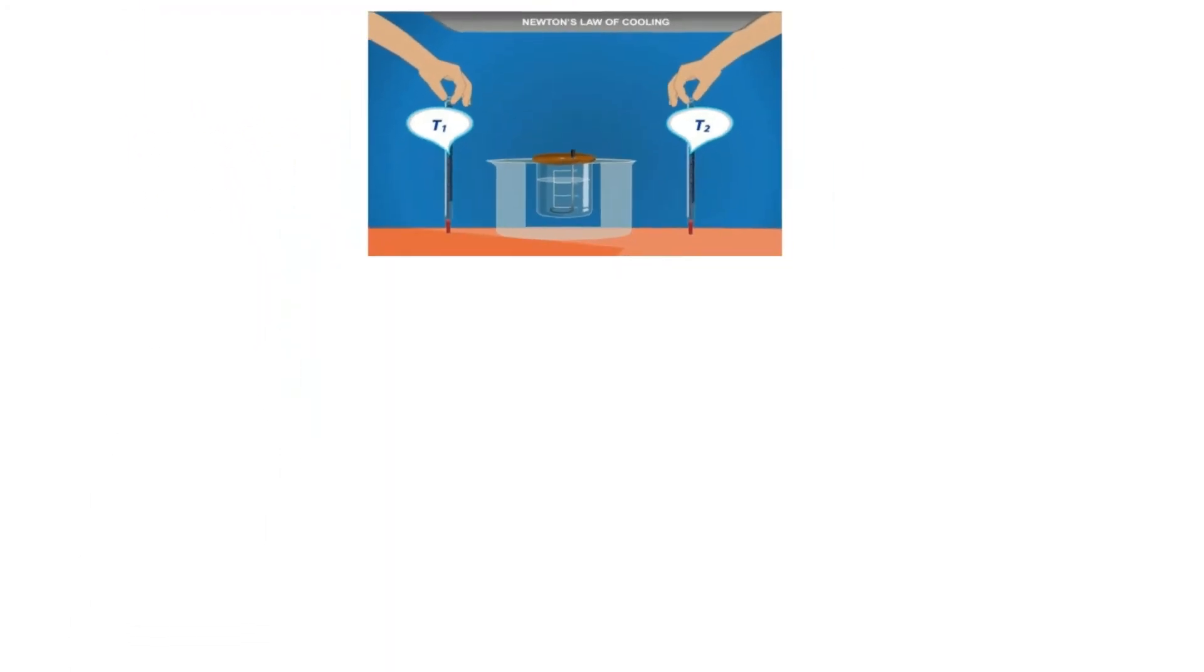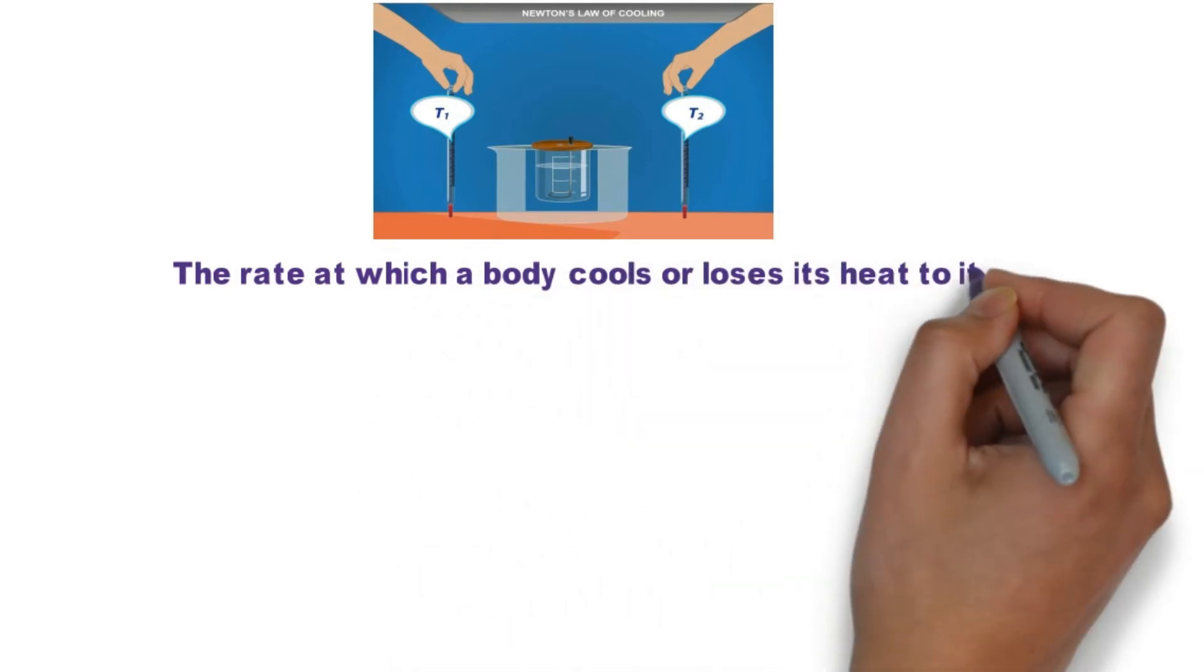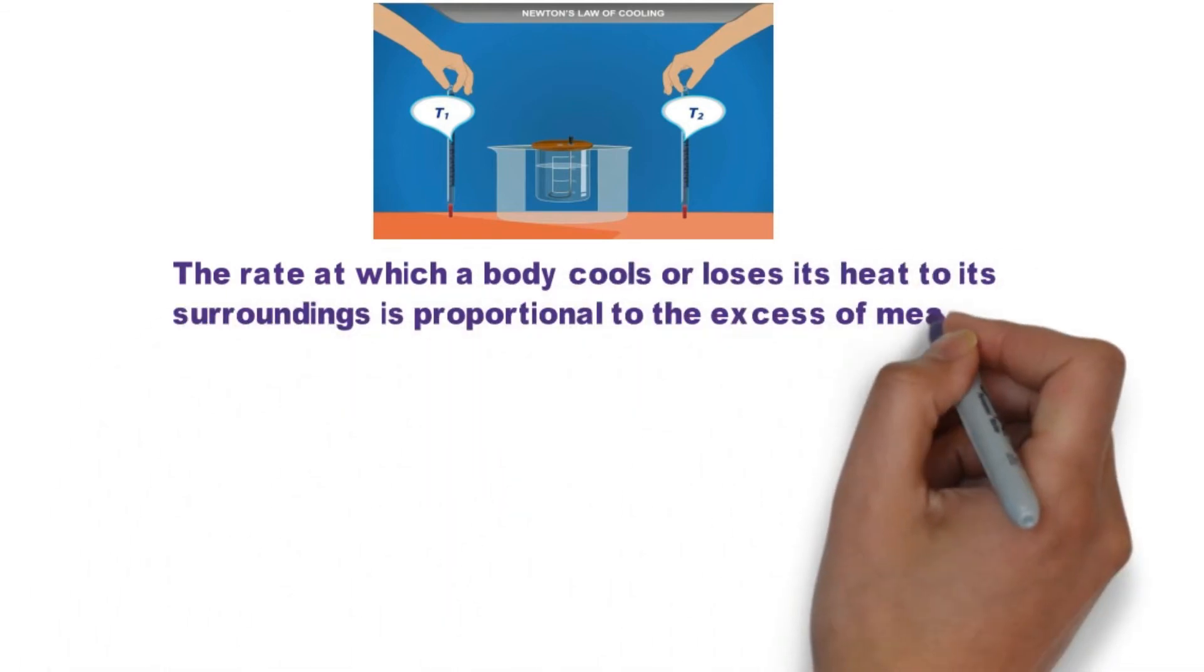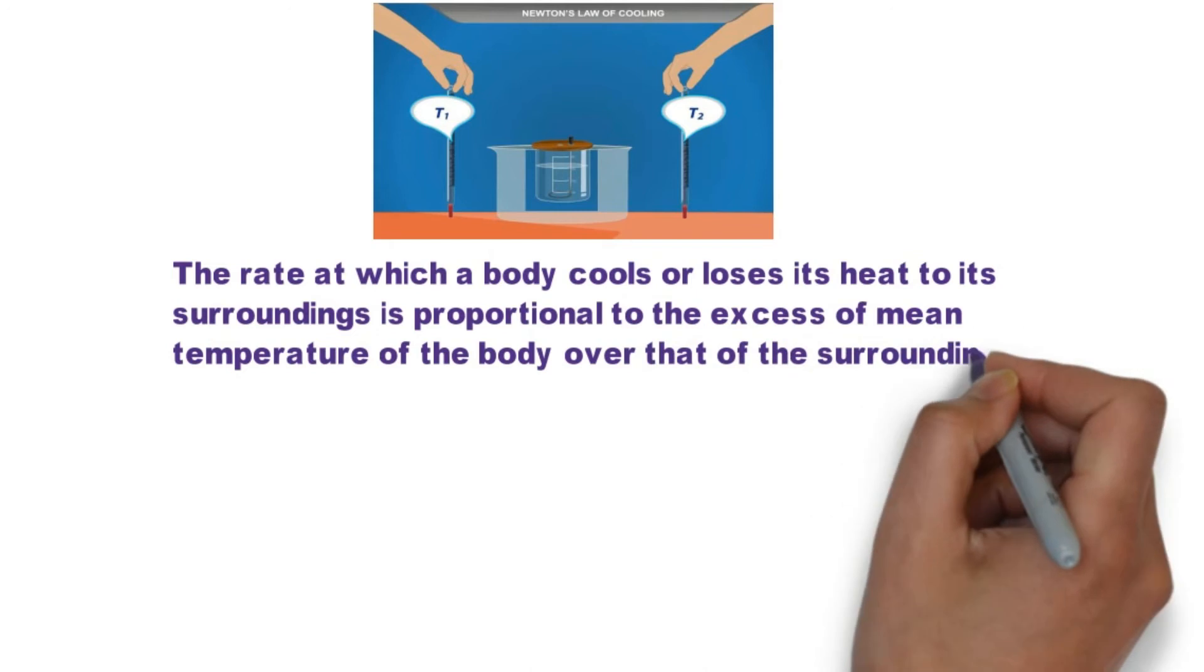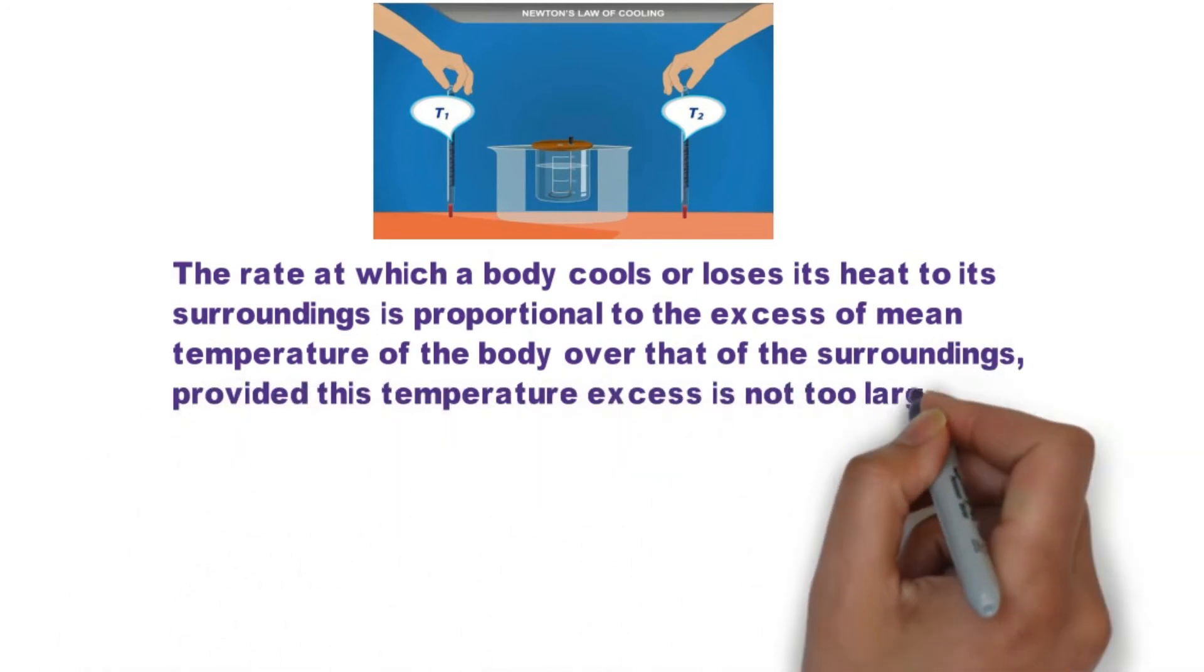Newton's Law of Cooling. The rate at which a body cools or loses its heat to its surroundings is proportional to the excessive mean temperature of the body over that of the surroundings, provided this temperature excess is not too large.